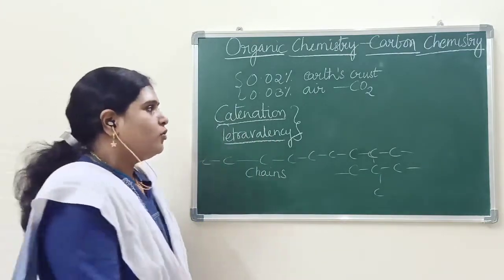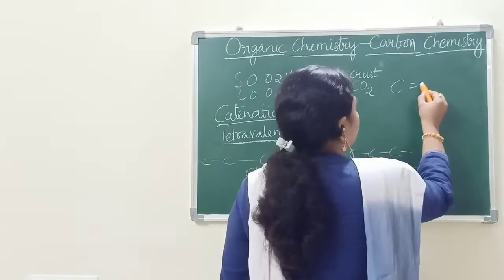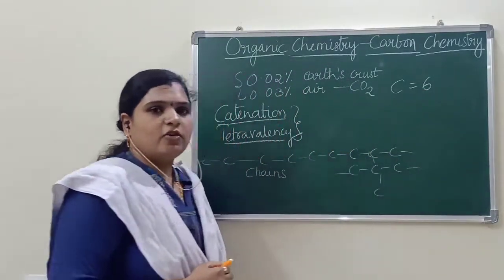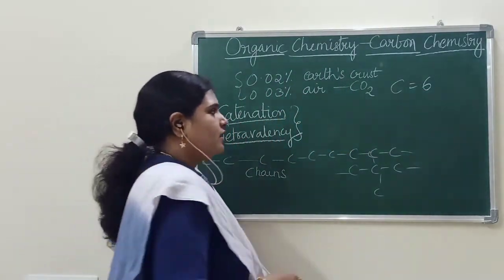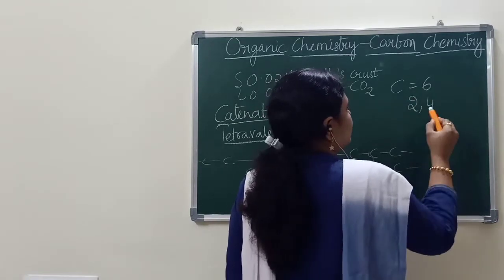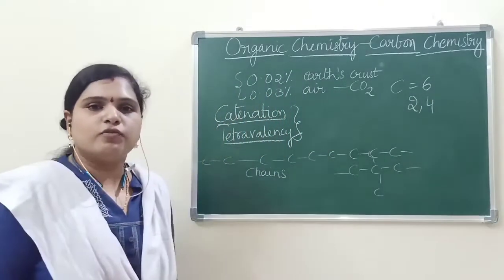You know, carbon is having the atomic number 6. That means, what is the electronic configuration if you write: 2, 4.